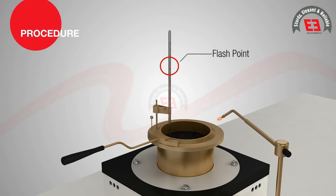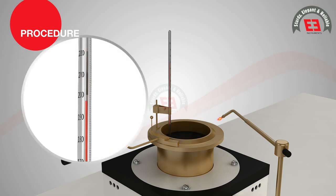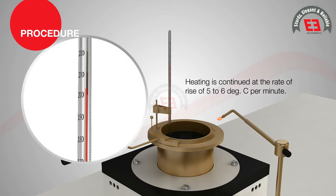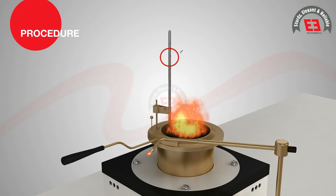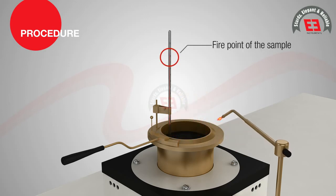After determining the flash point, heating is continued at the rate of rise of 5 to 6 degrees Celsius per minute. Application of the test flame is continued, and when the sample ignites for a minimum period of 5 seconds, the temperature indicated on the thermometer is noted as the fire point of the sample.